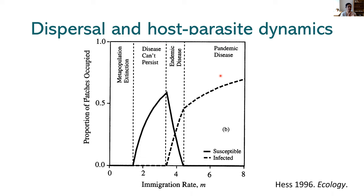This result — that increasing host dispersal increases parasite prevalence and the probability of endemic and pandemic disease — has been observed in theoretical models and experimental studies where researchers manipulated dispersal rate. But as someone who studies dispersal behavior, I see a glaring gap: these studies assume dispersal is a constant rate. They don't consider how parasites themselves might be influencing dispersal in their hosts. That's what I wanted to contribute.